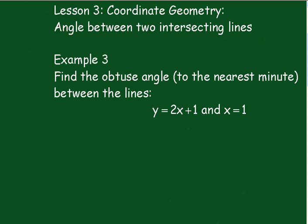Example 3: Find the obtuse angle to the nearest minute between the lines y equals 2x plus 1 and x equals 1. Now I'll just draw a diagram to illustrate this particular one. So we're going to have our axes here, and our lines y equals 2x plus 1 here, and x equals 1 here. Because now you can see you've got an infinite gradient, so we can't use the formula.